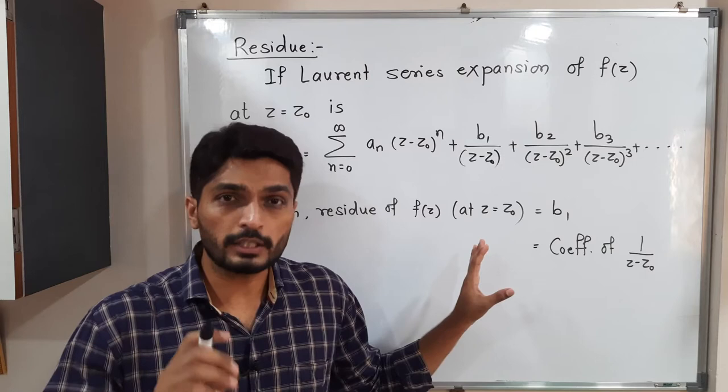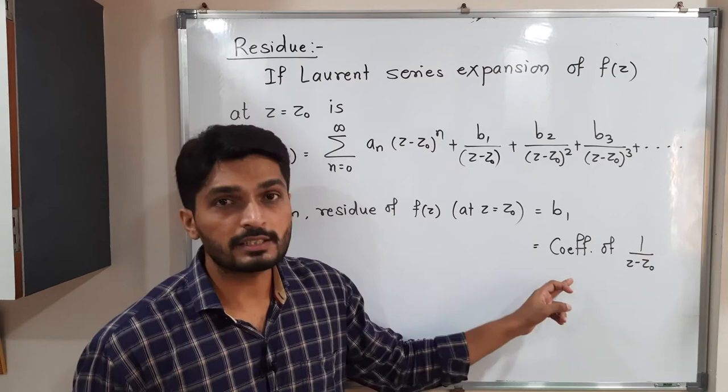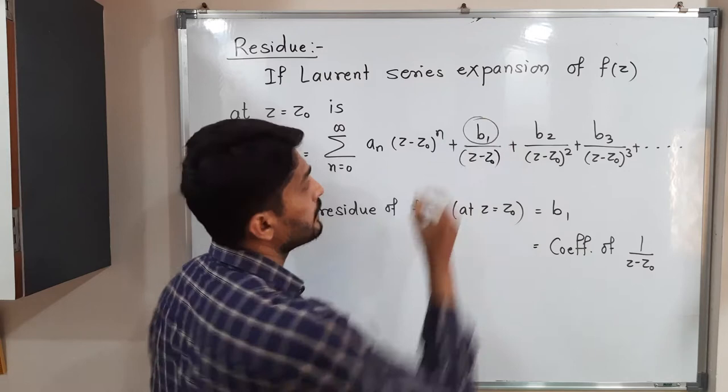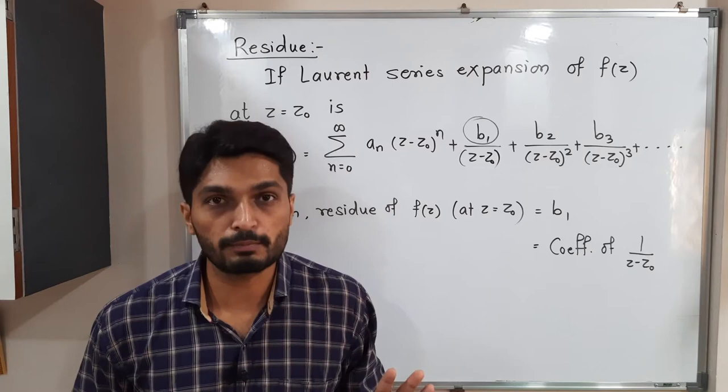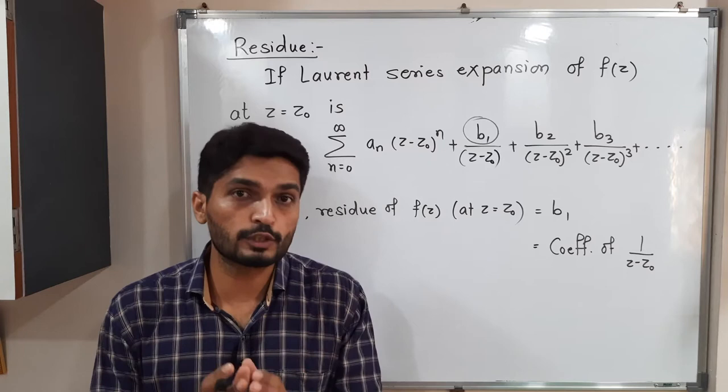So what is residue? Residue is nothing but the coefficient of 1/(z - z₀). As you can see here, the coefficient of 1/(z - z₀) is b₁. Whatever the value of b₁—3/4, 2/3, whatever—doesn't matter. That will be the residue of f(z) at z = z₀. This is the definition of residue.